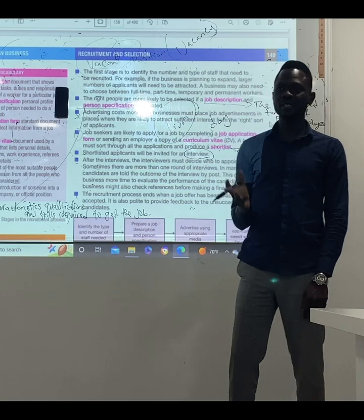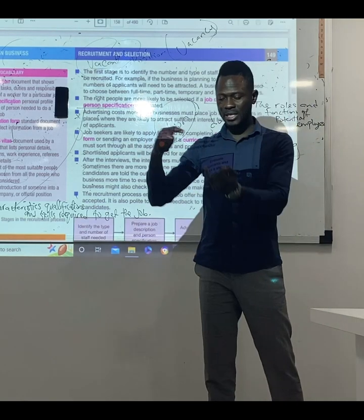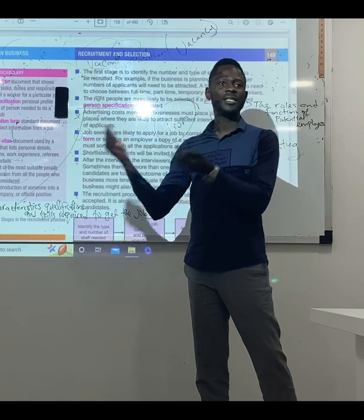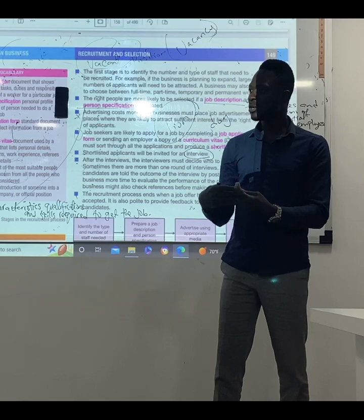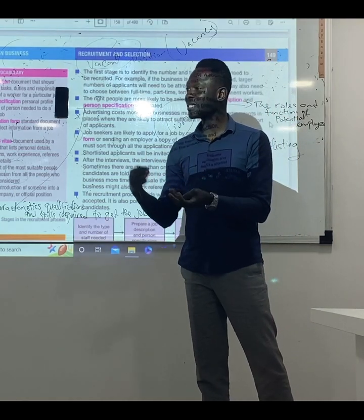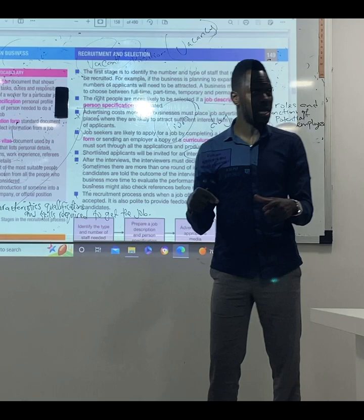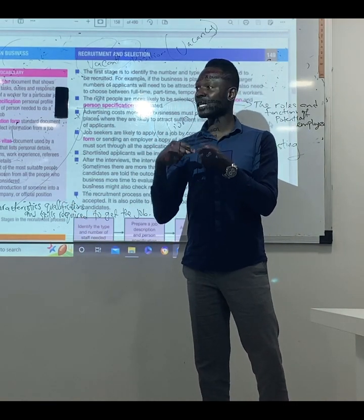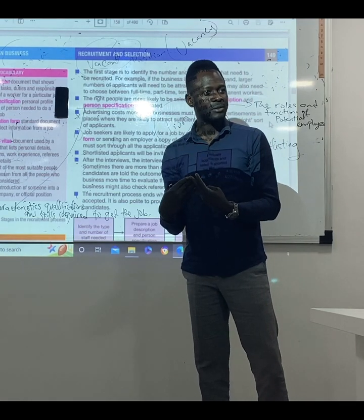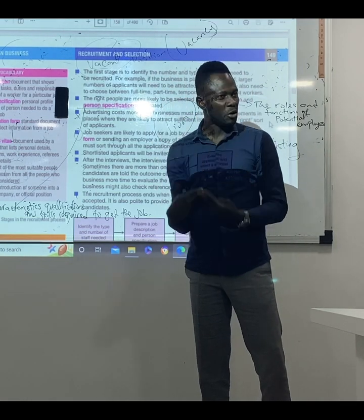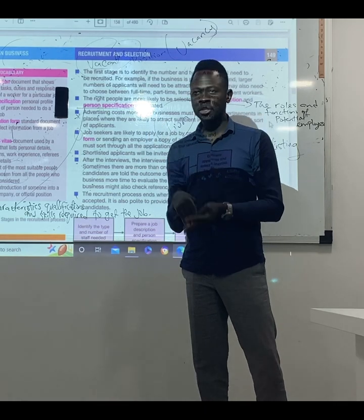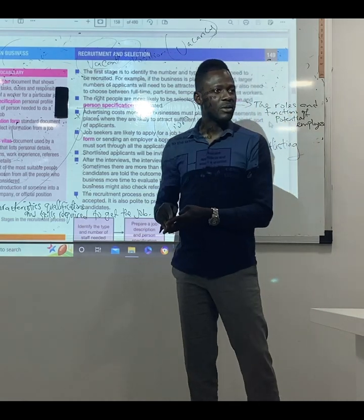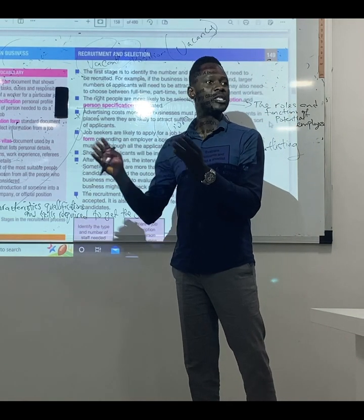Those are the stages of recruitment. The first stage is vacancy — a vacant position. The next is job description, then person specification. After that comes advertisement — which applies when it is external recruitment. The company then receives job applications, shortlisting is done, and then there is an interview. Successful candidates will get the job and be appointed. Unsuccessful candidates will be informed to try another time.